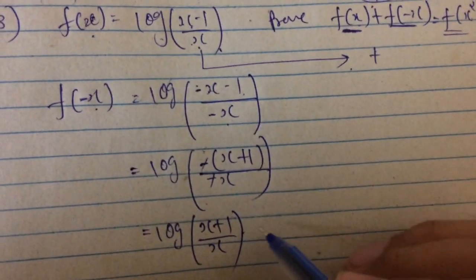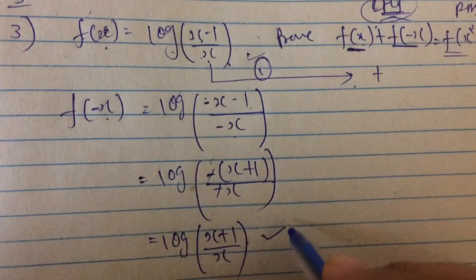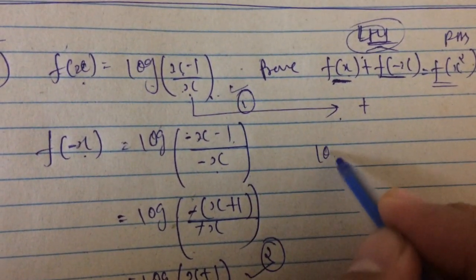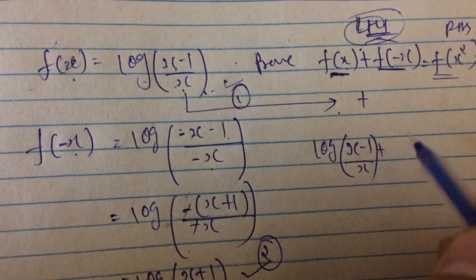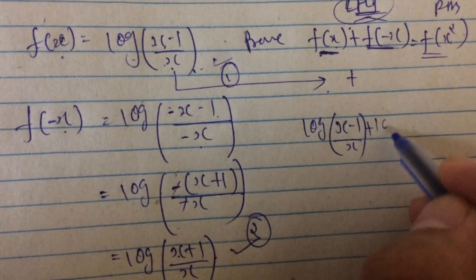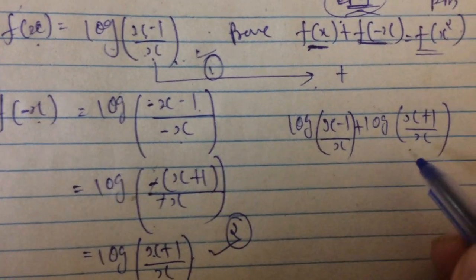Now we put both results, first one and second one, to this equation. That is f(x) equals log((x-1)/x) plus f(-x) equals log((x+1)/x).